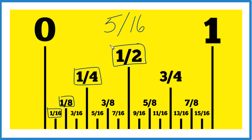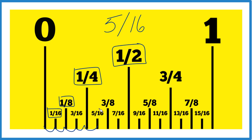We're looking for five sixteenths. Each one of these little blocks here is one sixteenth. There are 16 of them. So we're going to go one, two — there's three sixteenths, four sixteenths, five sixteenths, right there. That's what we're looking for.